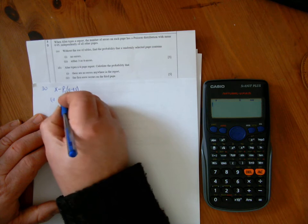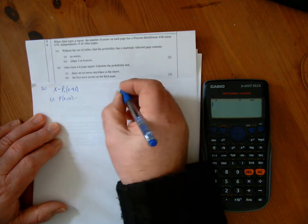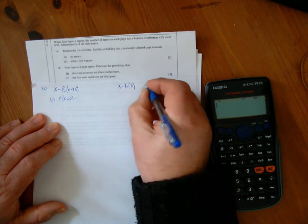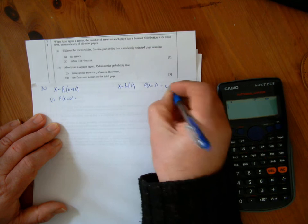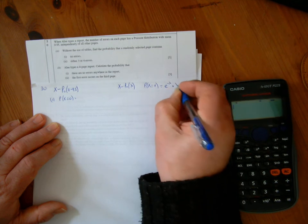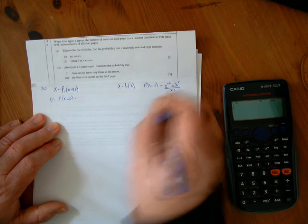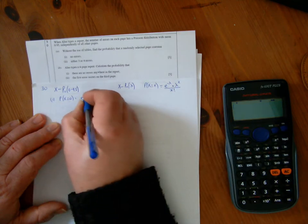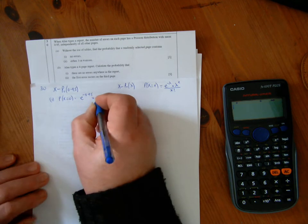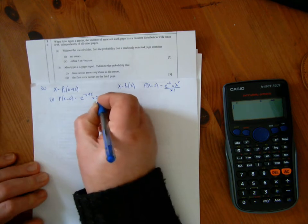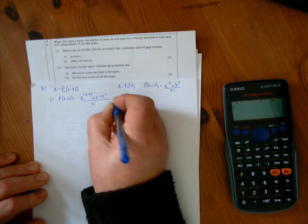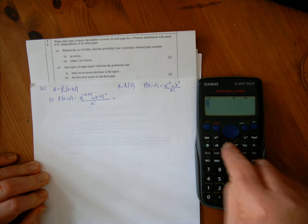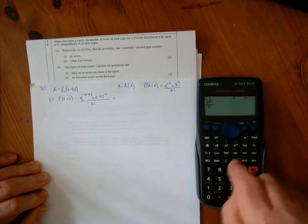The probability of X equals 0, so I'm using the Poisson formula: probability of X equals e to the minus lambda times lambda to the x over x factorial. So X equals 0 will be e to the minus 0.95 times 0.95 to the power of 0 divided by 0 factorial.